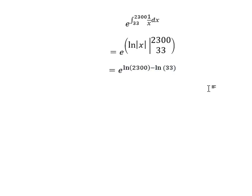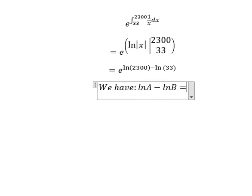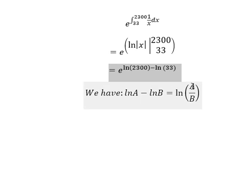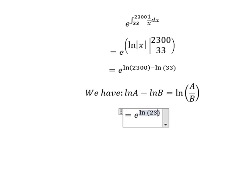Next, we have the formula: ln A minus ln B equals ln of A over B. So this one we can write as ln of 2300 over 33.